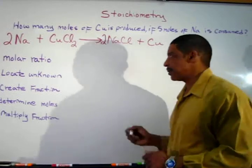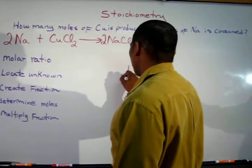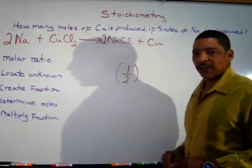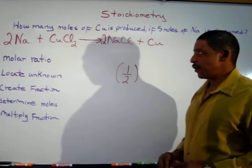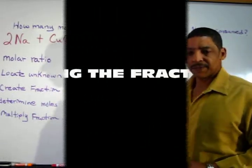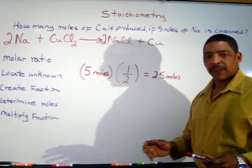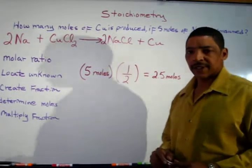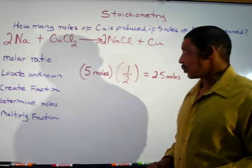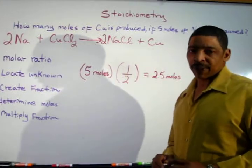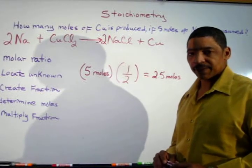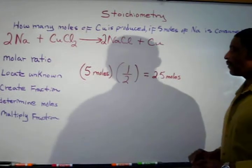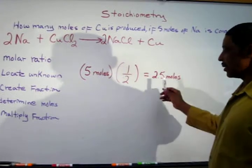To create this fraction, use the following technique where the amount of copper is unknown and the amount of sodium is given. The fraction should be 1 over 2, where you always write the coefficient for the unknown as the numerator and the coefficient for the substance that was given — in this case sodium — in the denominator. Simply multiply 5 moles times 1 half and the amount of copper produced will be 2.5 moles.